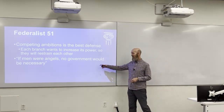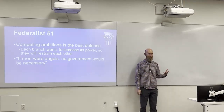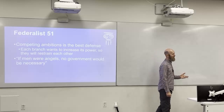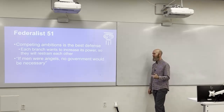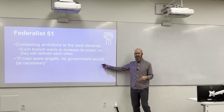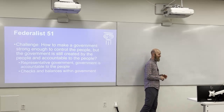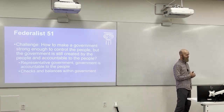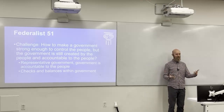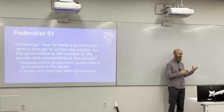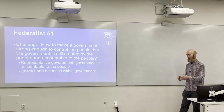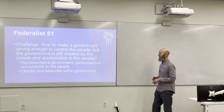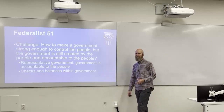There's a famous quote: 'If men were angels, no government would be necessary.' The founders believed people tend to abuse power if they can, so systems must restrain them. The challenge is: how do we make a government strong enough to control people because we need laws, but also keep the government accountable and not abusive? The answer is representative government — accountable to the people — and checks and balances within the government so no one group gets too powerful.